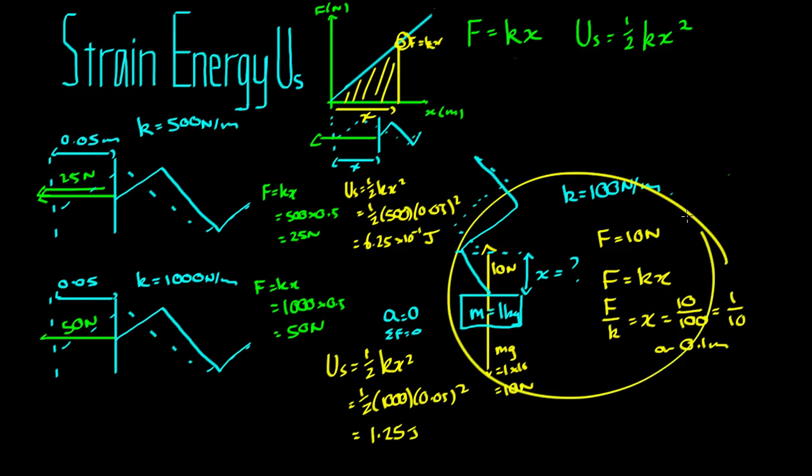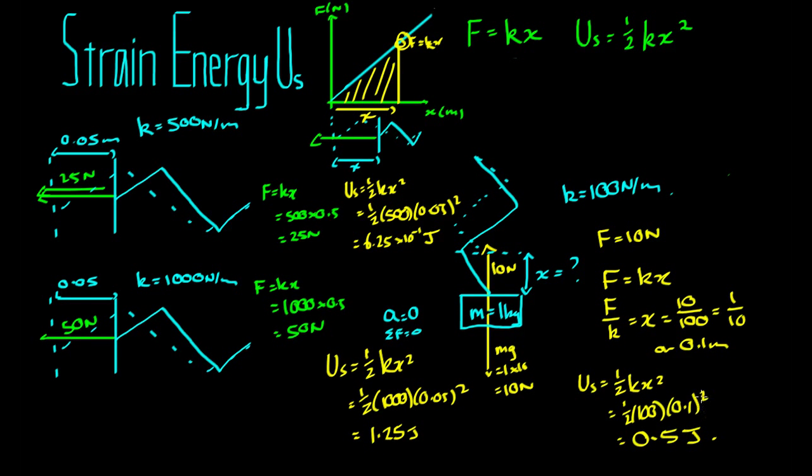Let's work out here how much spring potential energy is in this spring. U.S. equals a half kx squared. That's a half times 100 times 0.1 squared. That's 0.5 joules. That's how much energy we had to expend in order to get this spring to extend that 0.1 meters.